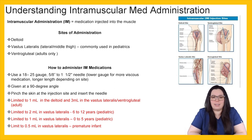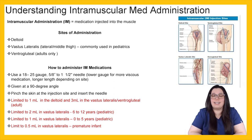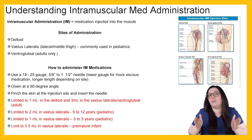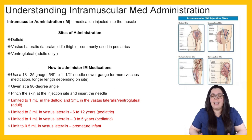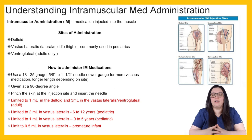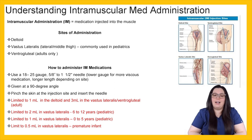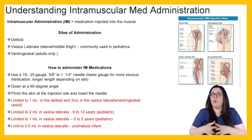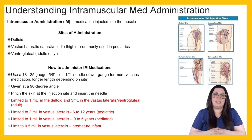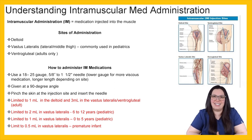For pediatric patients, you're limited to 2 mls in the vastus lateralis if they are between the ages of 6 and 12 years old. If they are 0 to 5 years old, we're only able to give 1 ml into the vastus lateralis. For premature infants, we're going to limit it to 0.5 mls when administering in the vastus lateralis.